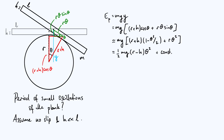For the full equation of motion we also need the kinetic energy. We start with the general expression for rotational kinetic energy: (1/2)Iθ̇², where θ̇ is the instantaneous angular velocity and I is the moment of inertia about the axis of rotation. We need to find the appropriate moment of inertia.